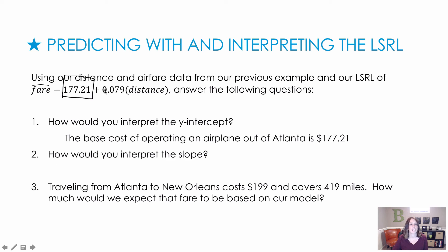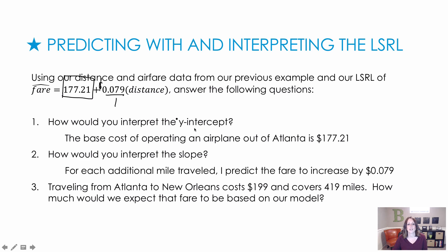How would we interpret the slope? It's 0.079 over 1, where the x is distance and y is fare. For each additional one mile traveled, we would expect the fare to increase by $0.079 — about 7.9 cents per mile. So the base cost is very high, but each additional mile adds very little to the cost.